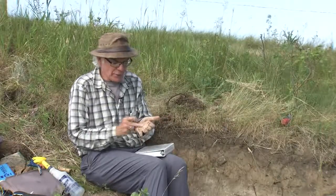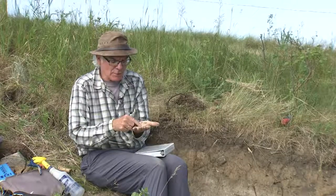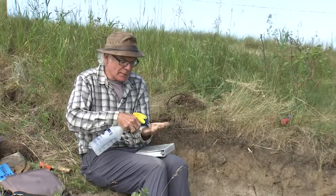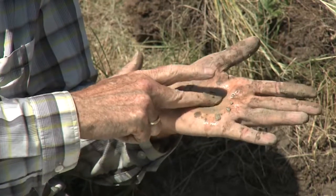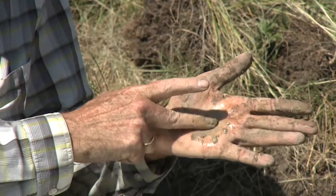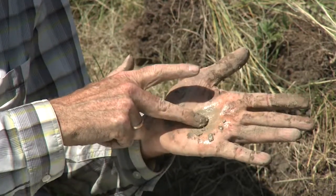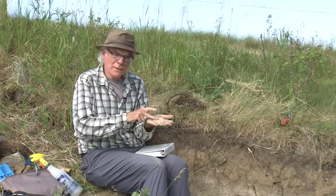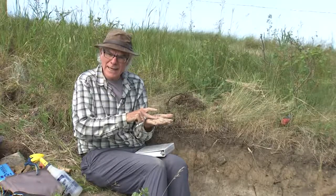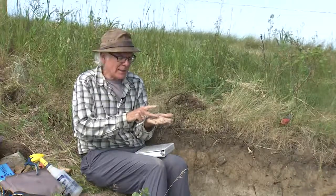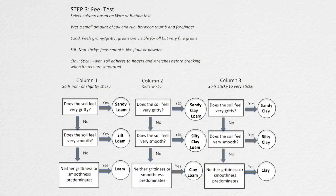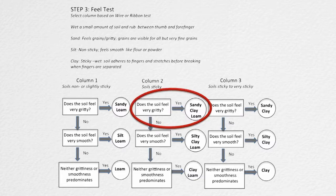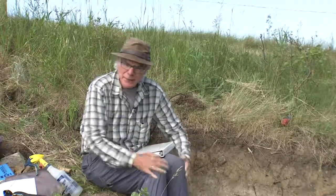To determine which of those three classes it is, I do the field test. I place a small amount in the middle of my hand, saturate it, and rub my finger on it, trying to determine the dominant feel — is it very gritty, very smooth, or neither? This sample has a considerable amount of grit, so it's a very gritty material. Consulting the handbook, this classifies as a sandy clay loam.